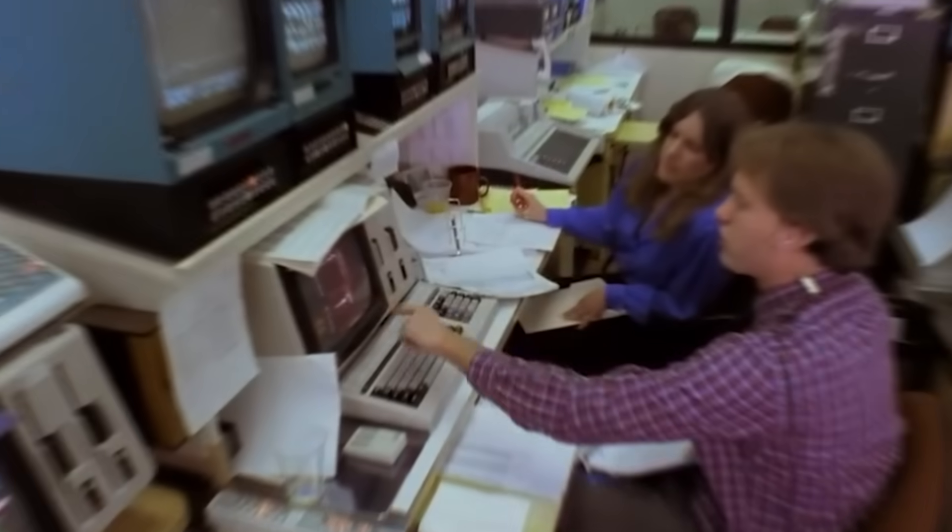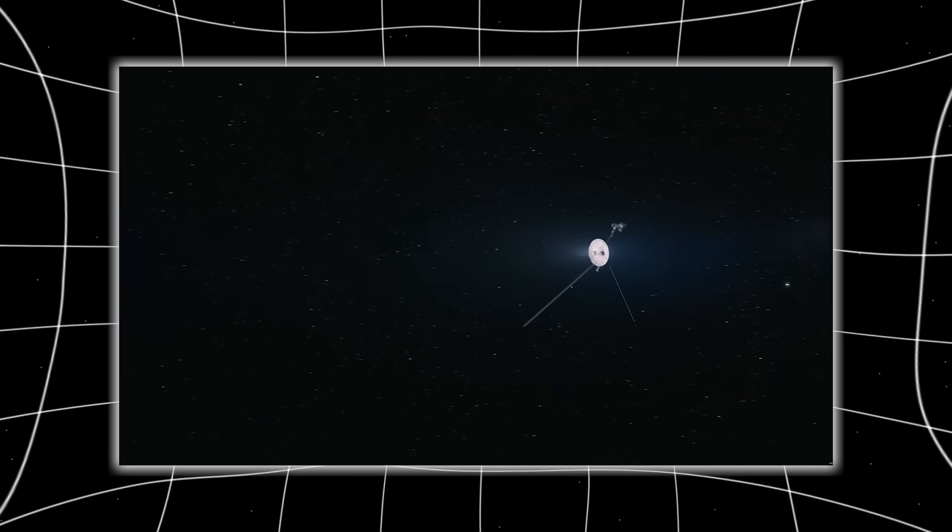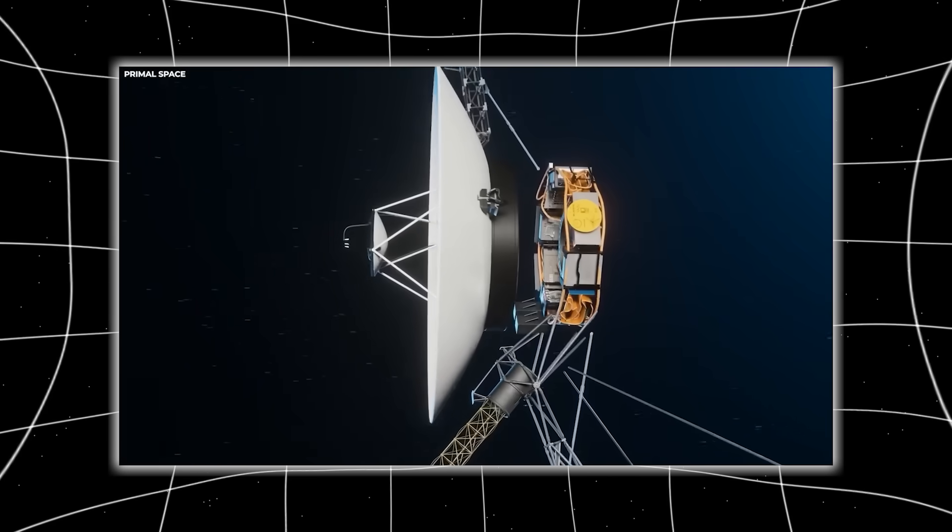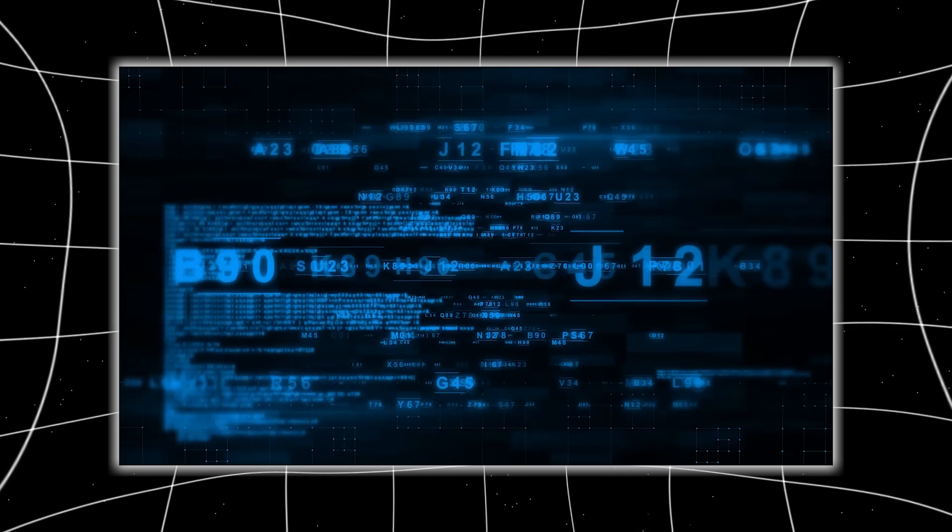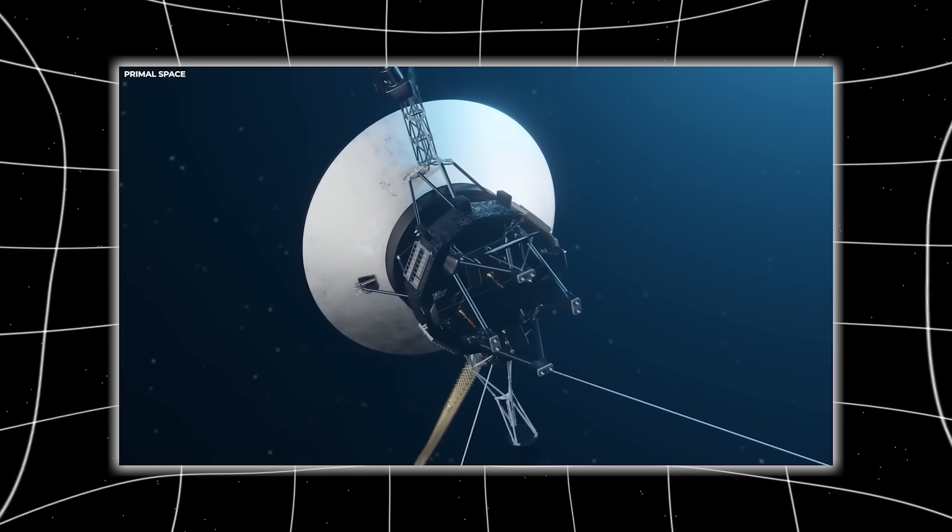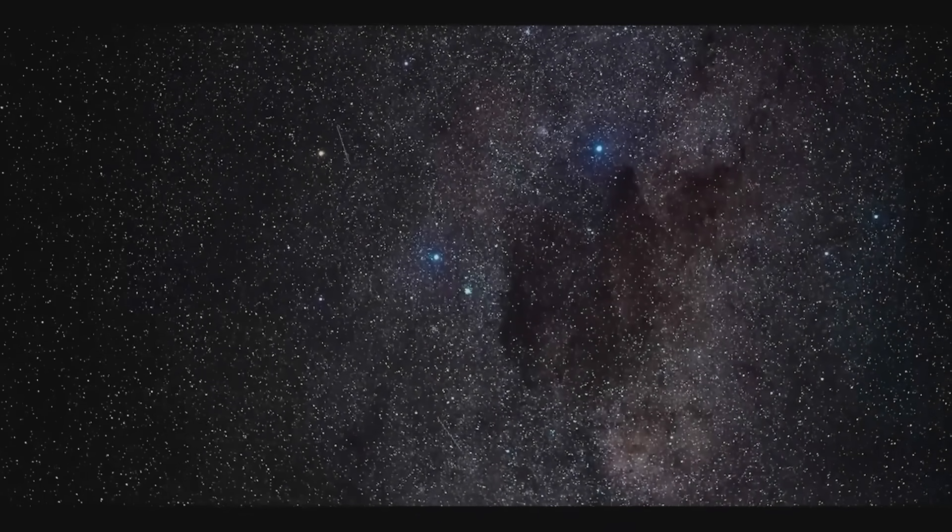It turned back. For reasons no one at NASA can fully explain, the most distant object ever created by human hands altered its orientation toward the very system it left behind. And then it sent back data so strange, so impossible, that the scientific world froze. What could make a dying probe billions of miles from home twist in the dark? And what did it see out there, in the silence between the stars?